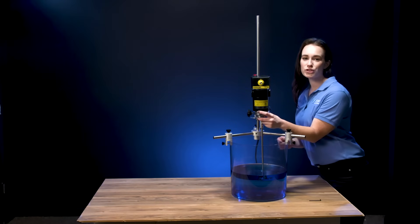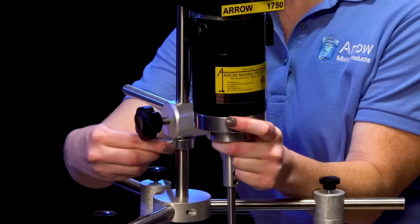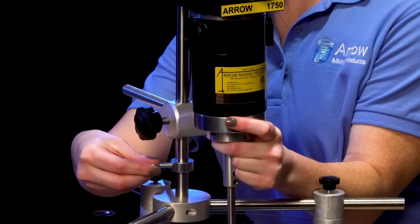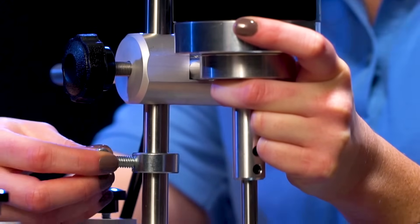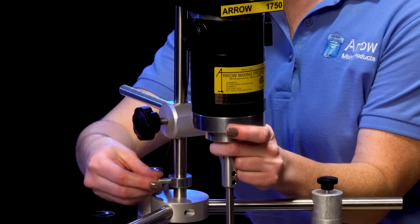To adjust the height, hold the stirrer for support. Unlock the collar. Slide down the center rod until you reach your desired location. Re-lock the collar.